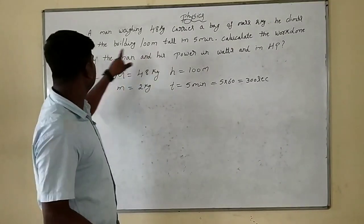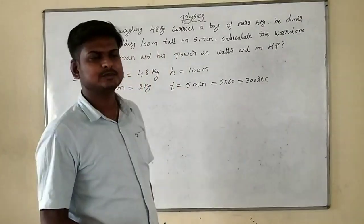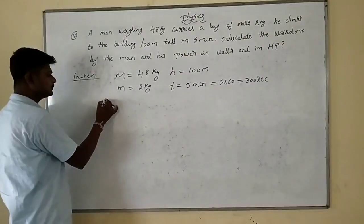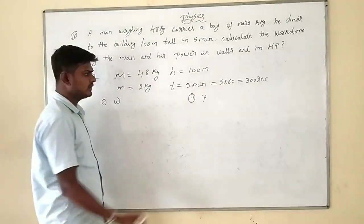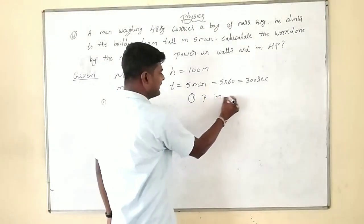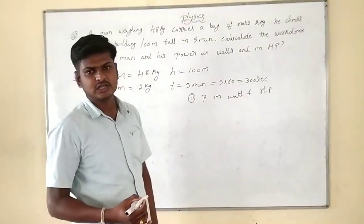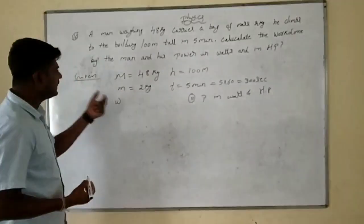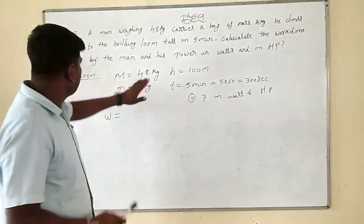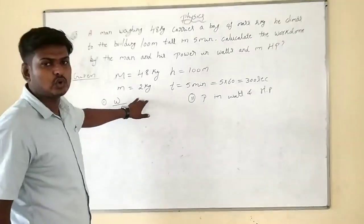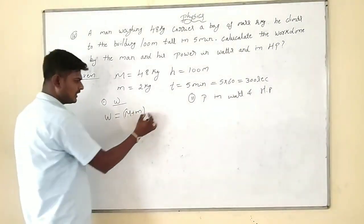Calculate the work done by the man and his power in watts and HP. Work done W equals MGH. Here the man is 48 kg and carries 2 kg, so total mass is capital M plus small m, into g times h.